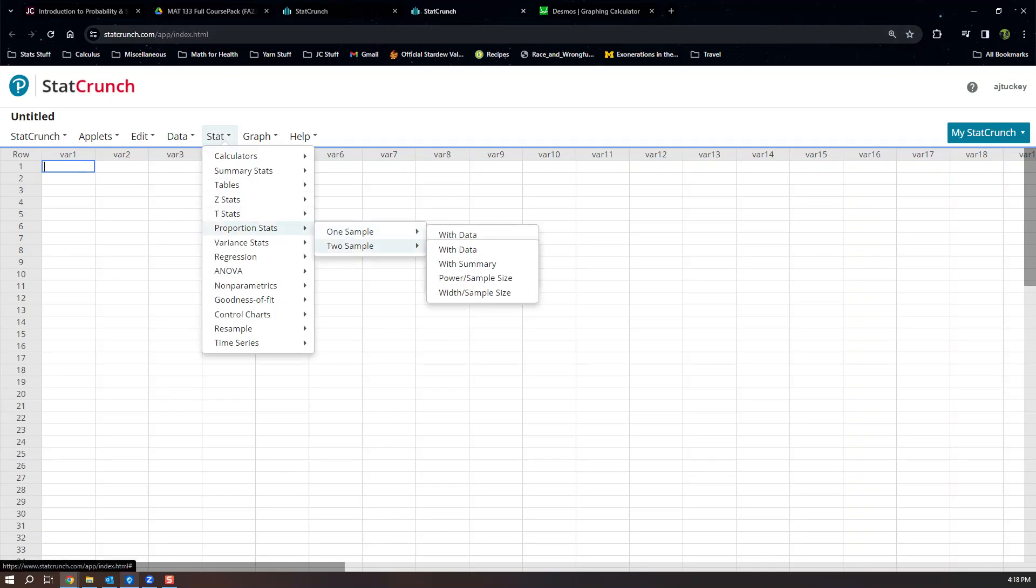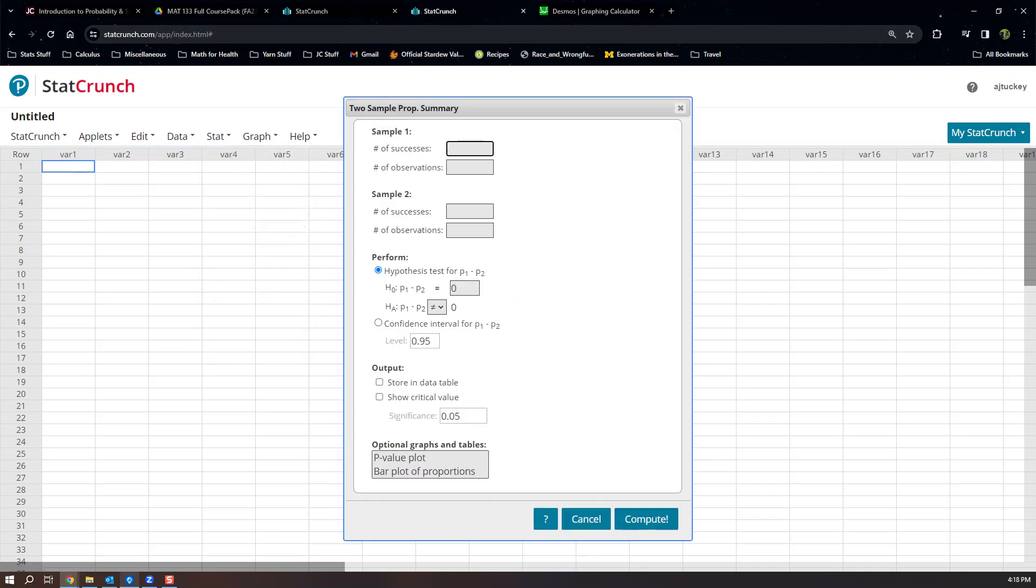Stat, Proportion, Stat, Two Sample because we're in chapter 11, with Summary. And then we tell it the numbers. For group one we had x1 was 350, n1 was 963, just like in chapters 9 and 10. And this was 447 and this was 954. We already wrote those numbers on the previous page.